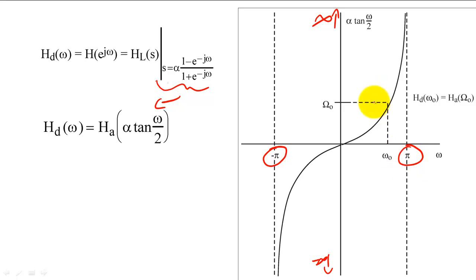Notice how the tangent function asymptotically approaches pi as the analog frequencies go to infinity. This mapping means that our digital filter's frequency response will resemble a squished version of our analog filter's frequency response.